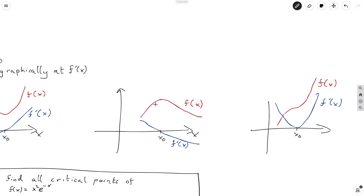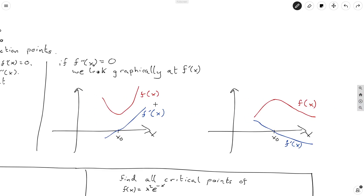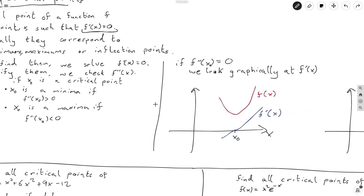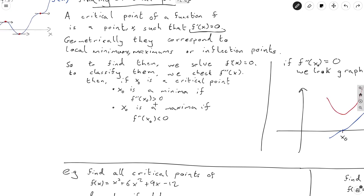And lastly, if f prime of x just glances off the axis, that means we're going from positive to zero to positive. So what that corresponds to is this inflection point we were talking about earlier, where we're going up, then slowing down, coming in flat, but that's only for an instant and then we start going up again. Generally speaking, you won't have to deal with this situation because it can be a bit messy to argue rigorously. But if you do, this is what you have to do. In general, you'll just use these tests most of the time.